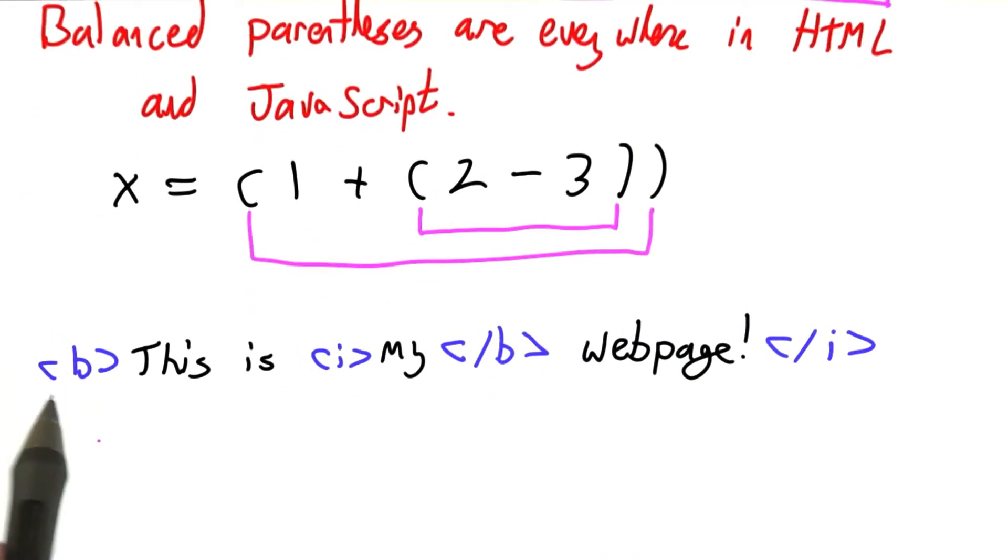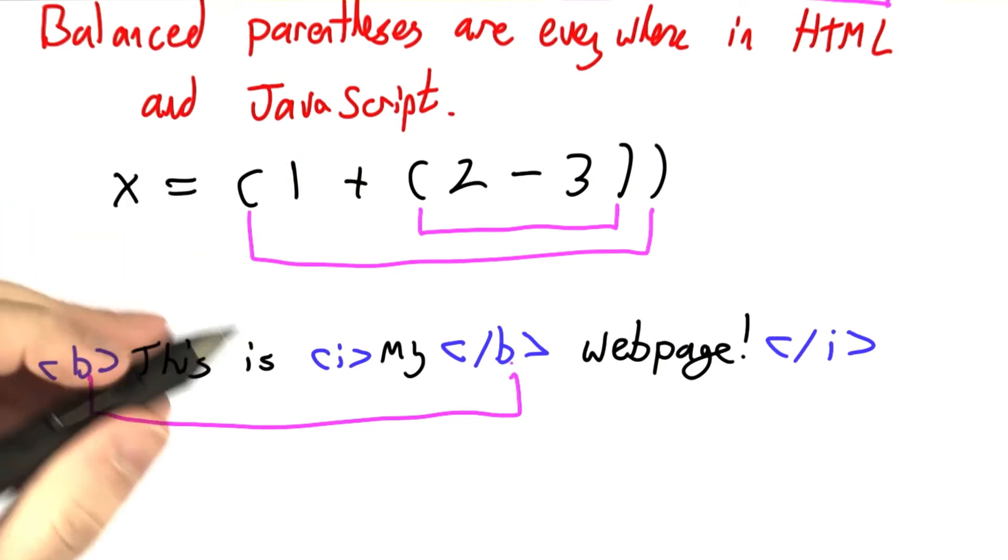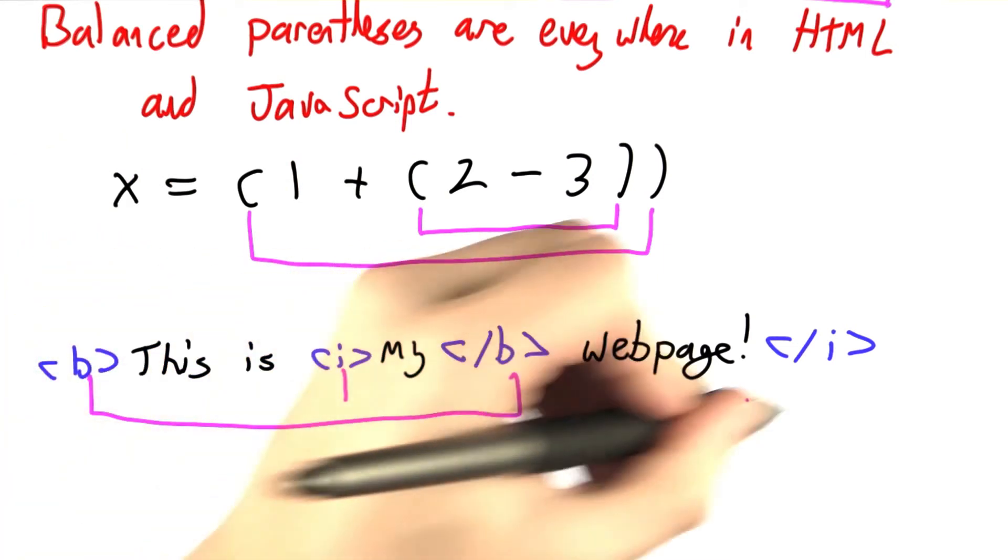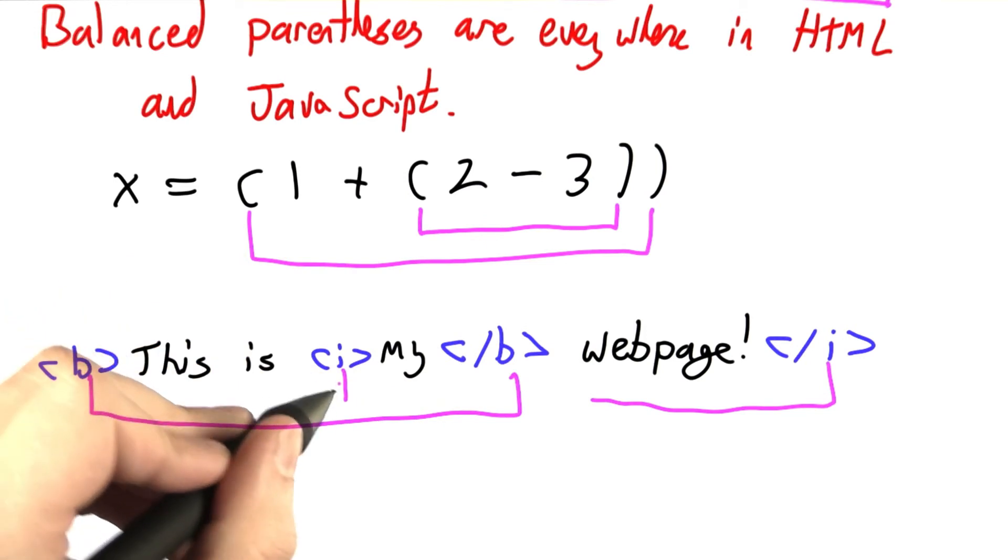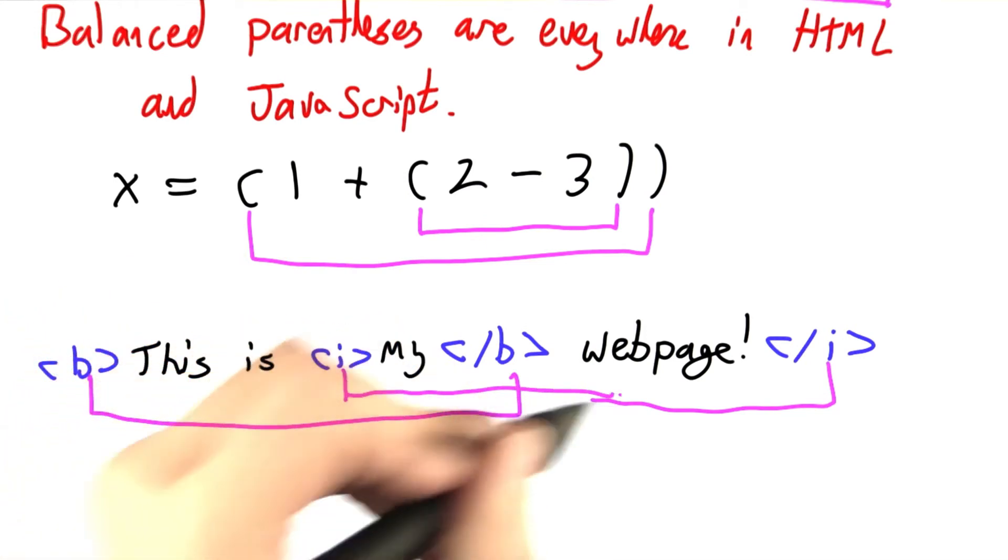Here we see an example of malformed HTML. The tags, the parentheses of HTML, don't match up properly. Let's see what happens when I try to draw that same sort of diagram. Oh, there's no way to connect these two eyes without crossing the lines and crashing over each other.